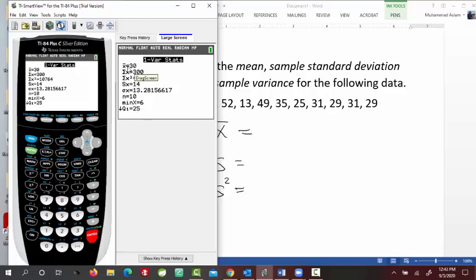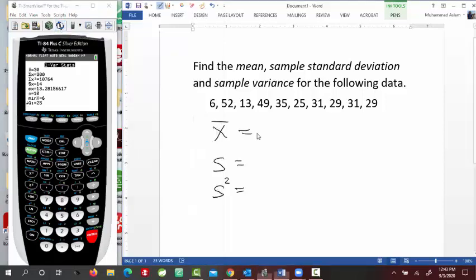So let me write this data down here. Again, mean is X bar equals 30, and standard deviation is 14. Let me write it here. That's your standard deviation.